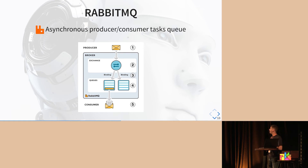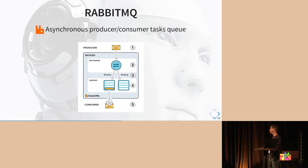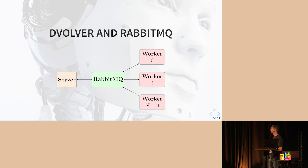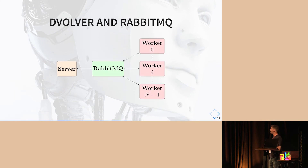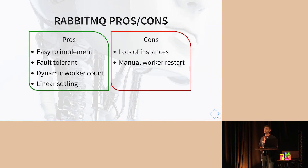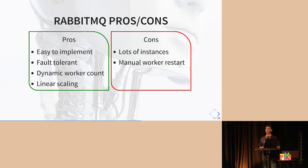If you don't know RabbitMQ, it's a queue or a set of queues. You can have multiple producers putting messages in the queue, and you can have one or multiple consumers picking and handling the messages in the queue. We managed to put RabbitMQ in between our server, where the genetic algorithm runs, and the workers, where the training is done. Because of that, we have easy implementation, fault tolerance for free, and we can scale dynamically the workers. We are also tolerant to a worker failure.